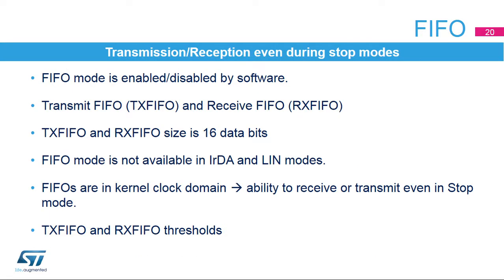The USART can operate in FIFO mode, which is enabled or disabled by software and is disabled by default. It comes with a transmit FIFO or TX FIFO and a receive FIFO or RX FIFO, each being 16 words deep. When the IRDA and LIN modes are used, the FIFO mode is not supported. Provided that the TX FIFO and RX FIFO are clocked by the kernel clock, it is possible to transmit and receive data even in stop mode. It is possible to configure TX FIFO and RX FIFO thresholds, mainly to avoid underrun-overrun issues while waking up from stop mode.